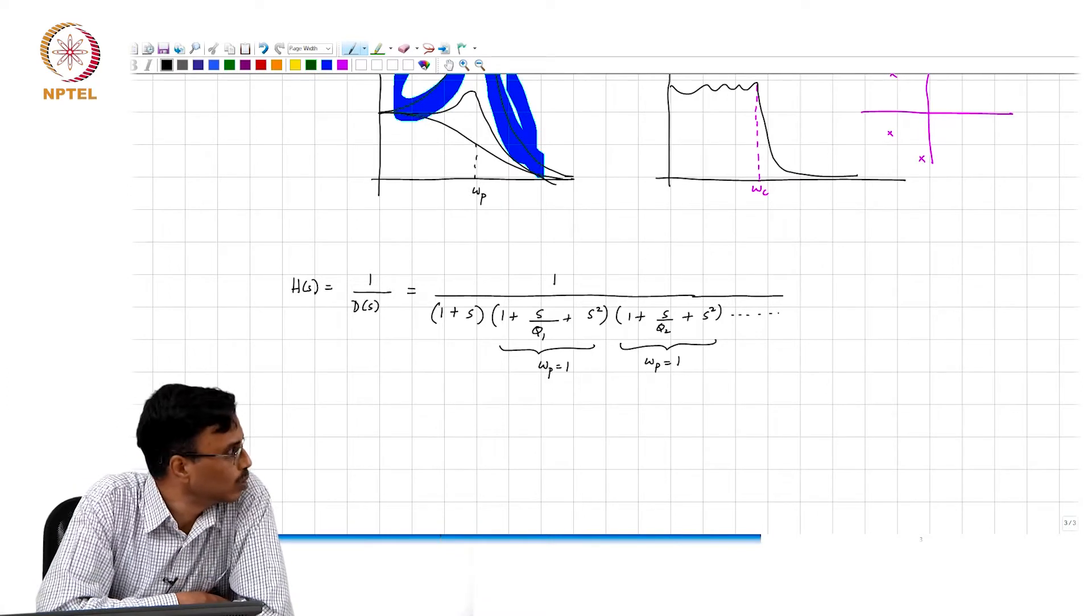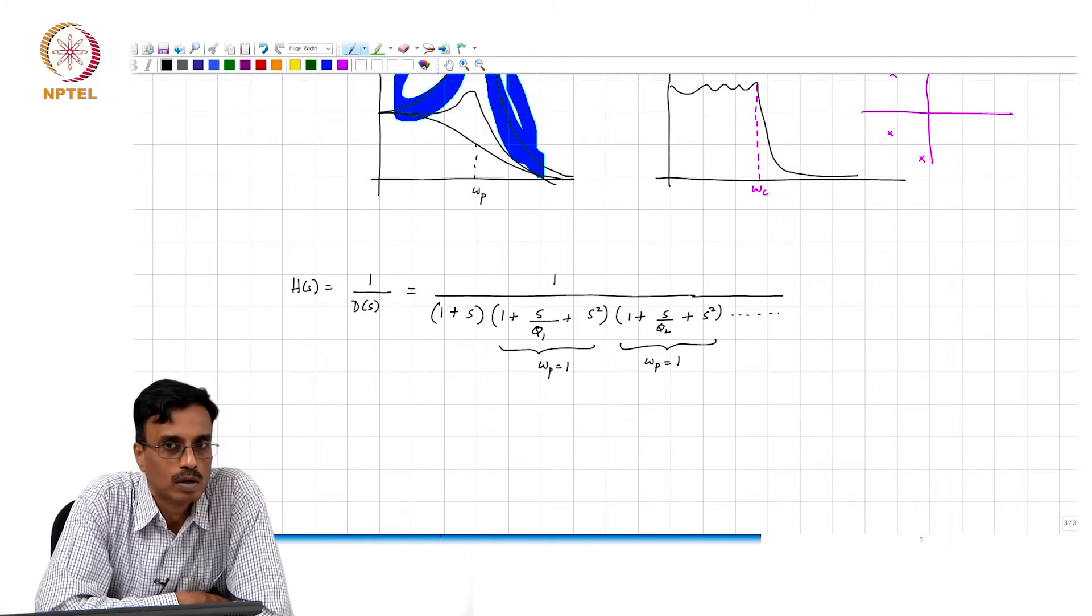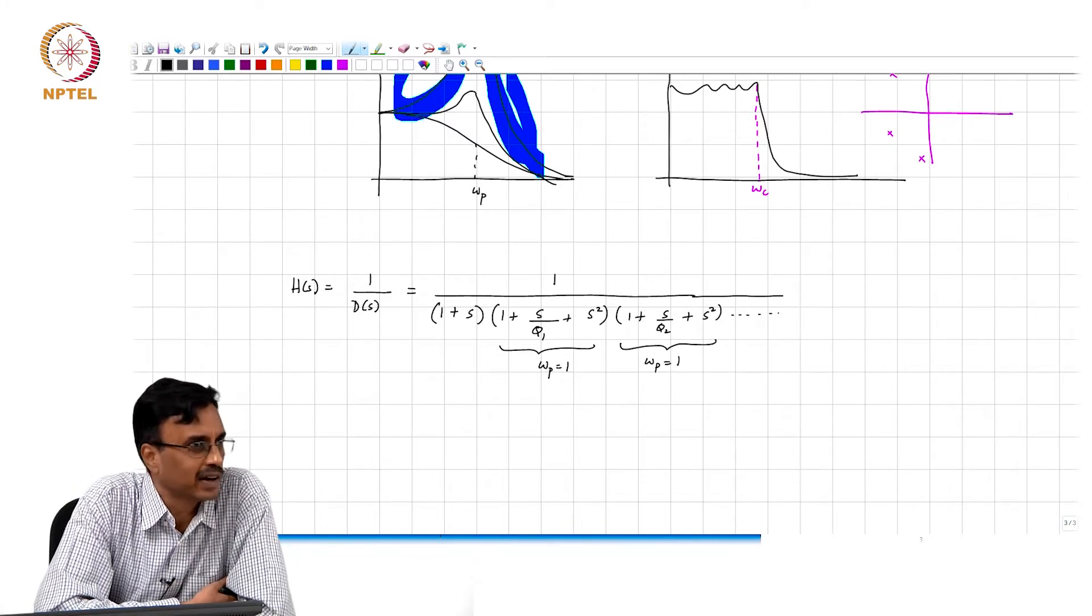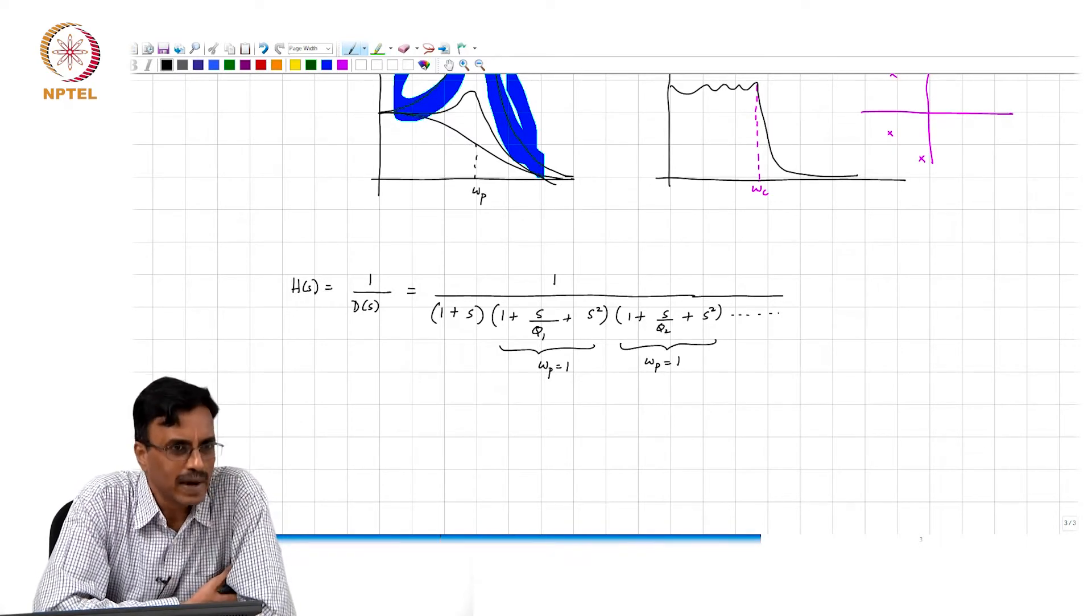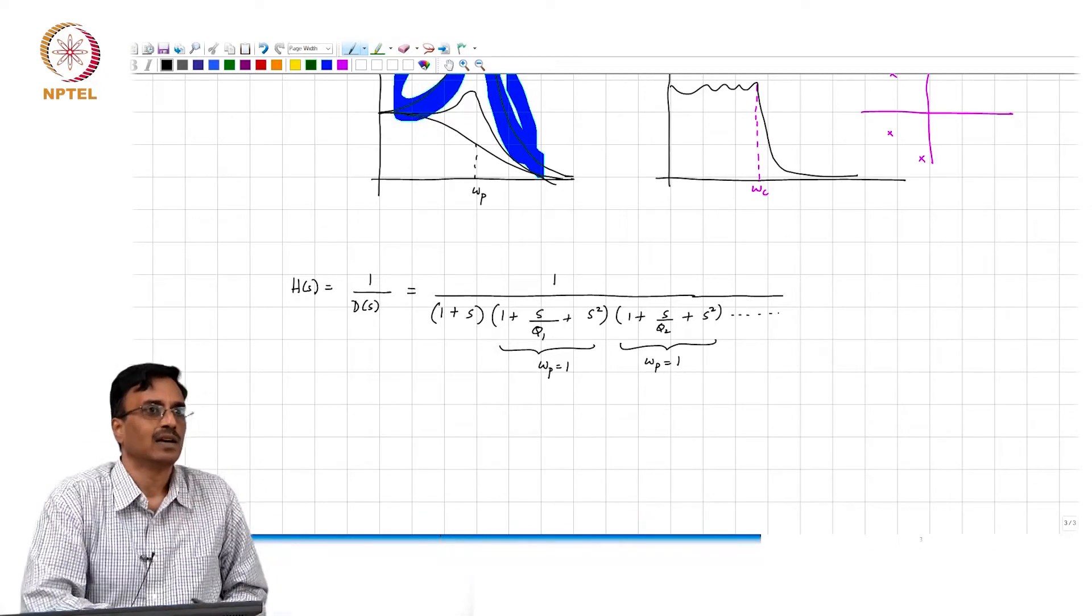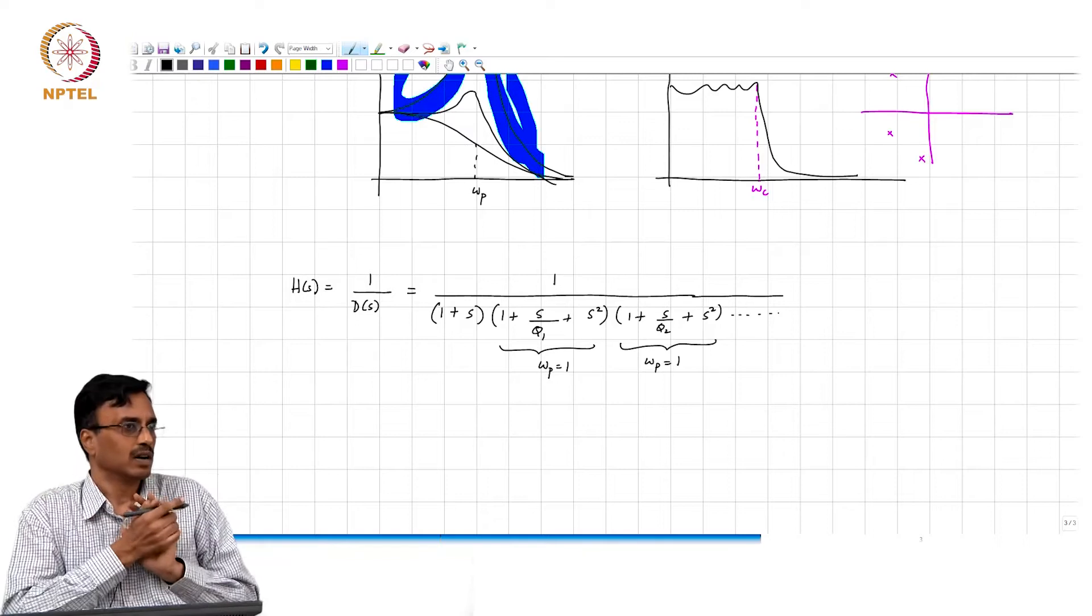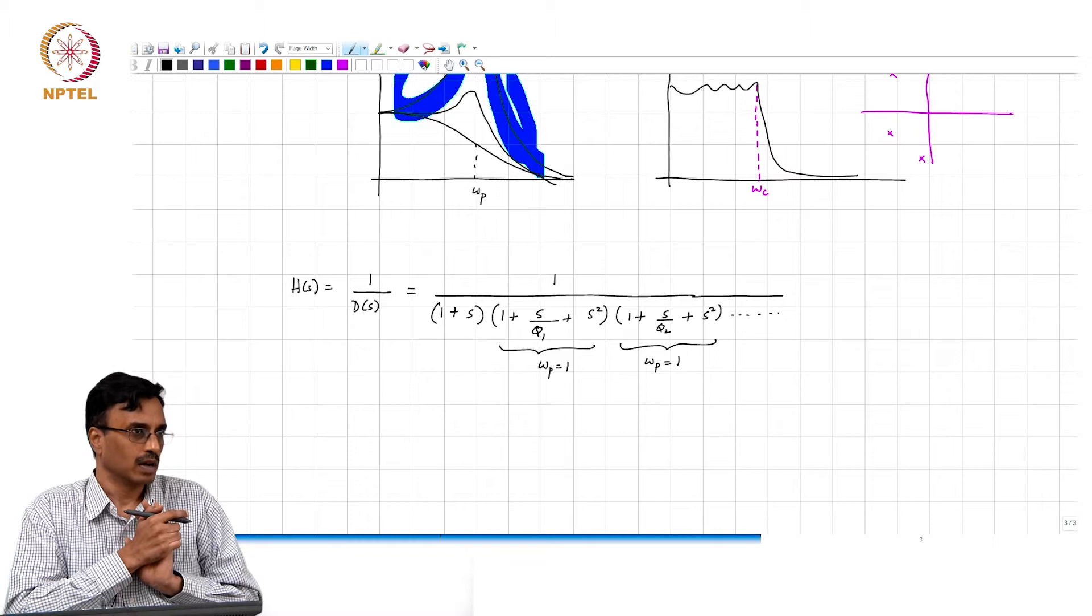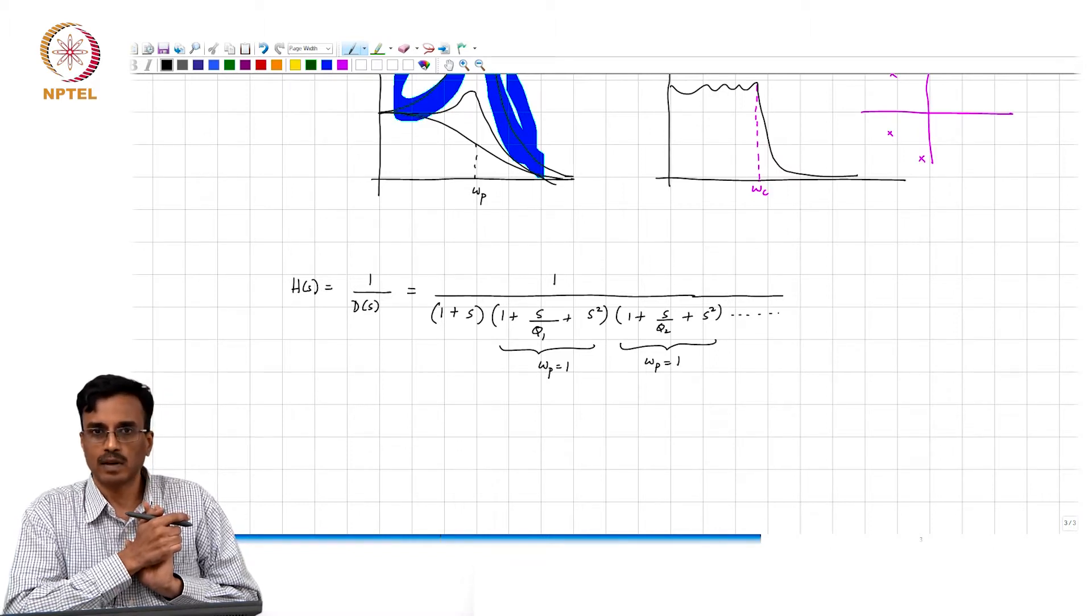How would we implement this? What do we need to learn to do? If we know how to implement a first order section and a second order section, we can just cascade these sections and get any order filter without any problem.